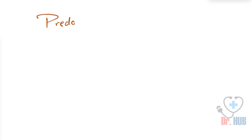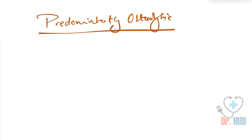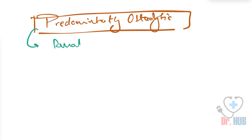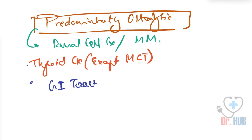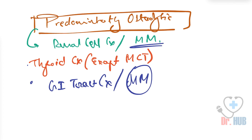Now we look at the predominantly osteolytic category. This includes renal cell carcinoma, multiple myeloma, thyroid carcinoma (except medullary carcinoma of the thyroid), gastrointestinal tract carcinoma, and malignant melanoma.